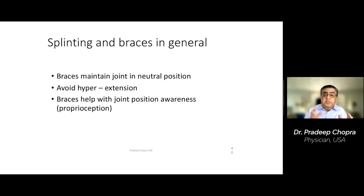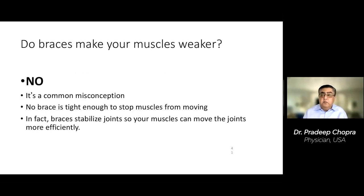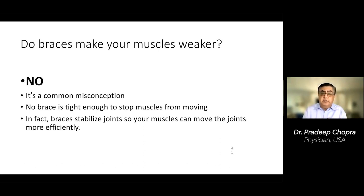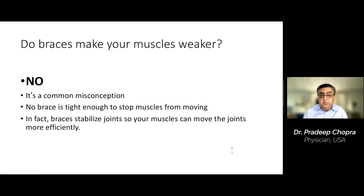Regarding splinting and braces: the job of a brace is to keep the joint in a neutral position and avoid hyperextension. Doctors sometimes say don't wear a brace because it makes your muscles weak — that is absolutely not true. Braces surround joints, not muscles. When they align the joints, your muscles can move more efficiently. If I have knee instability and don't wear a brace, I won't move. With a brace, my knee feels better, I feel more stable, I walk more, I use my muscles more — and that's why braces actually make muscles stronger.